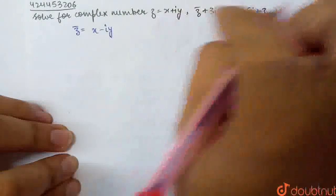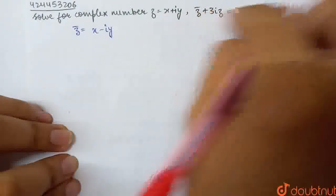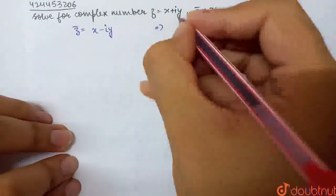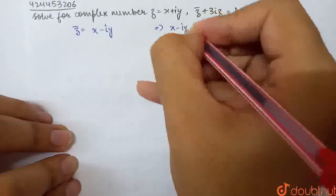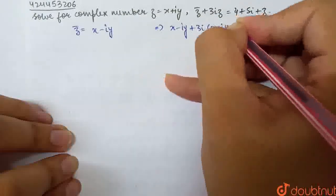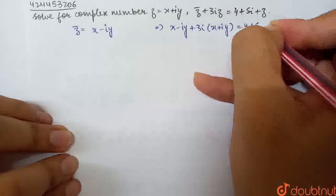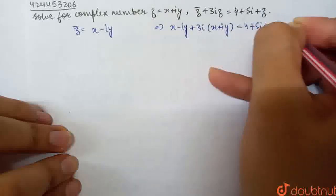Now we have Z conjugate. Z has given this, Z bar has given this. We have to put the Z to do this. So what is Z conjugate? That is X minus iota Y plus 3 iota into X plus iota Y equal to 4 plus 5 iota plus X plus iota Y.